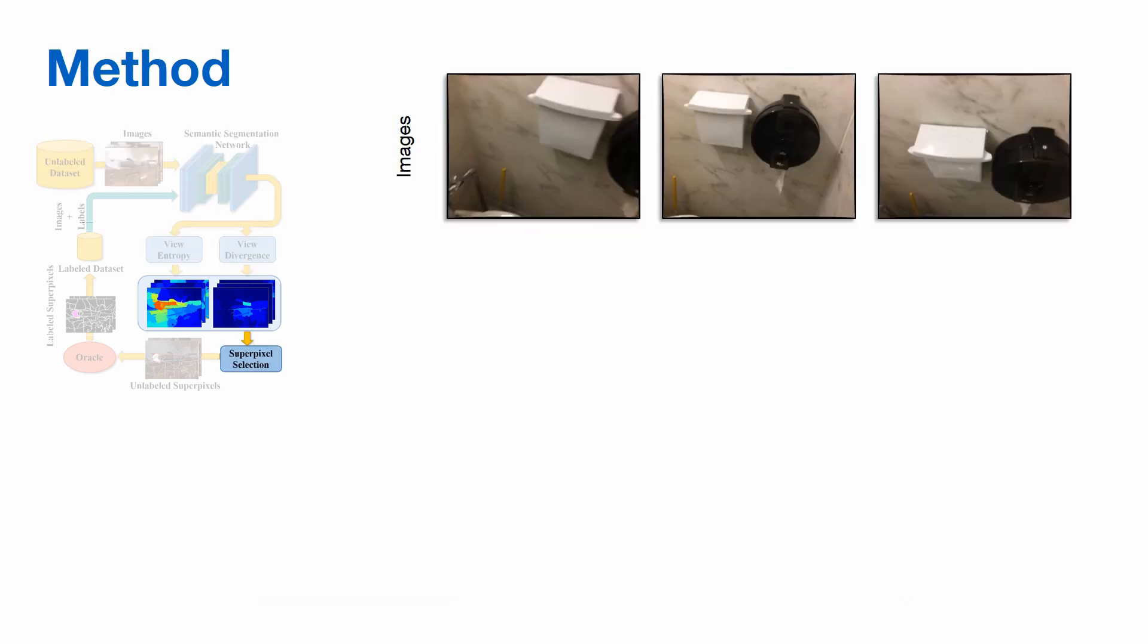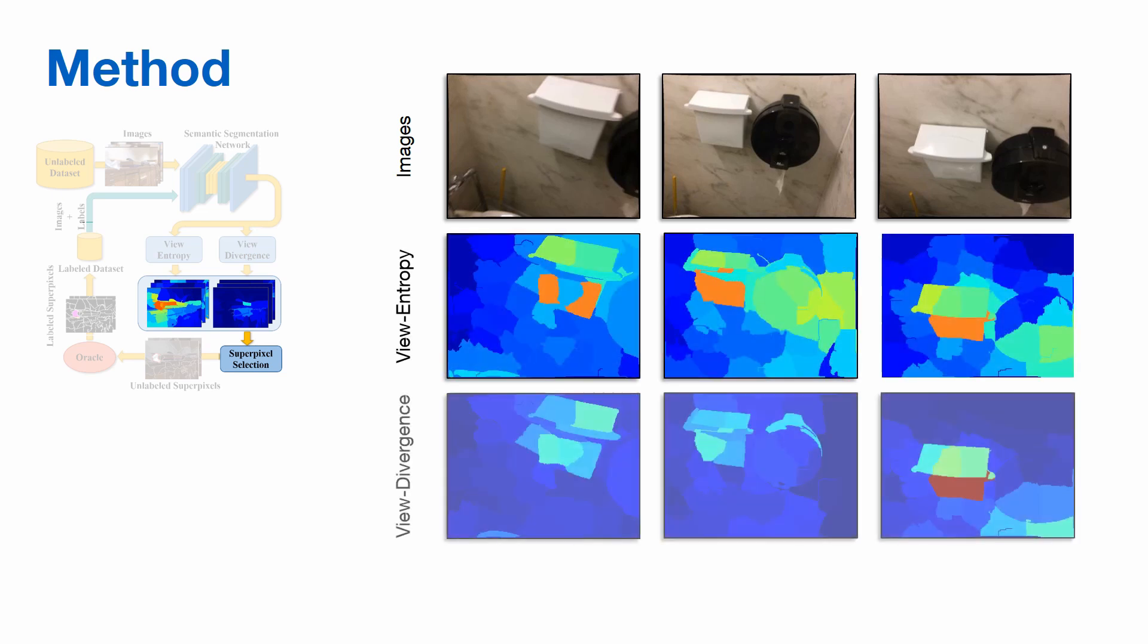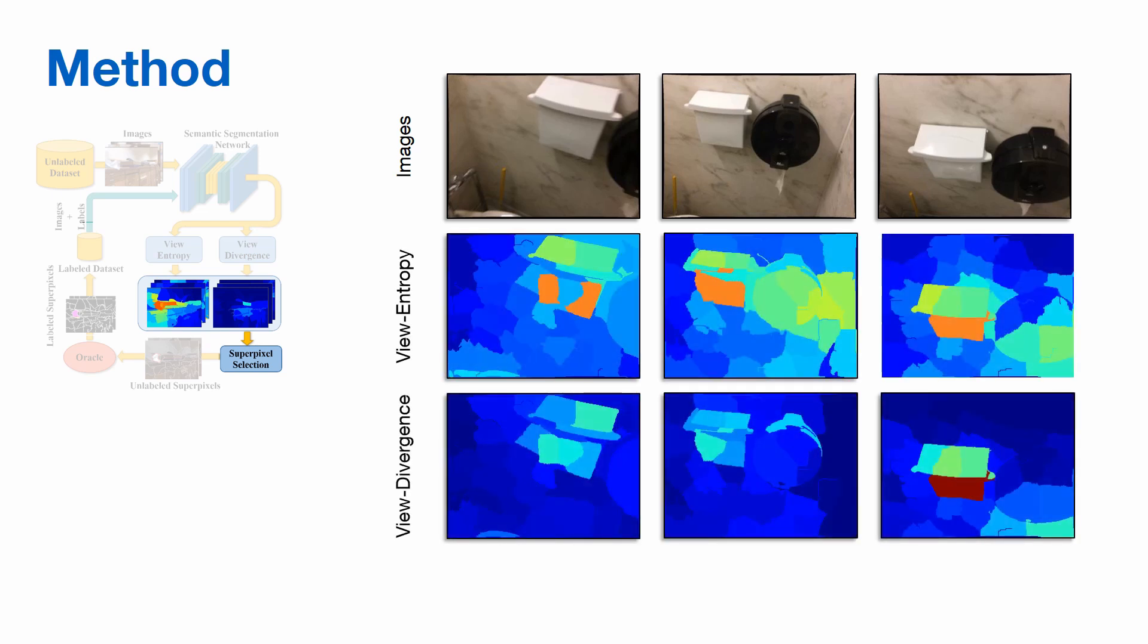Once we have the view entropy and view divergence scores for each pixel, we associate this score to each superpixel of the image. To decide for which superpixels we should acquire labels, we first find the superpixels with the highest view entropy scores, and among them choose the view with the maximum view divergence score.